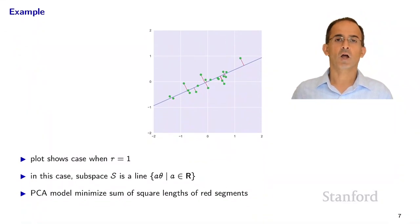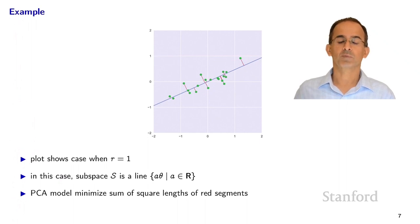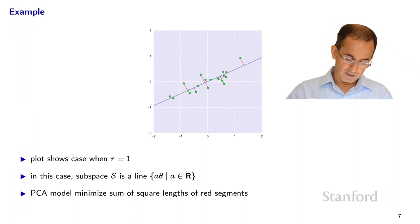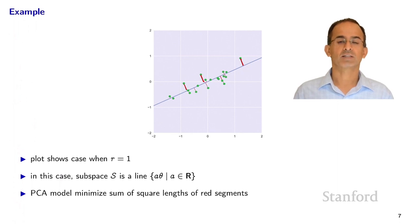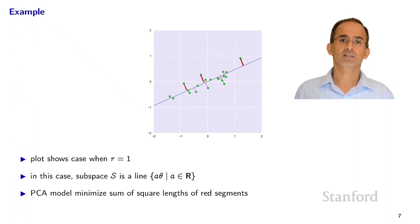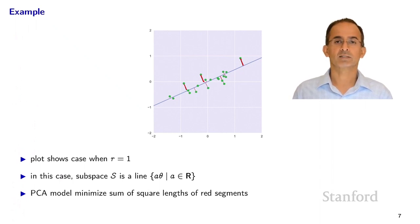For r equals 1, there's a nice geometric interpretation. We have data points and we're trying to choose a one-dimensional subspace — just a line. The loss function is the distance between each point and the line. The sum of the squares of those distances is the empirical risk scaled by n. We're trying to find the subspace that best fits the data, measuring fit by the normal distance between a point and the subspace.